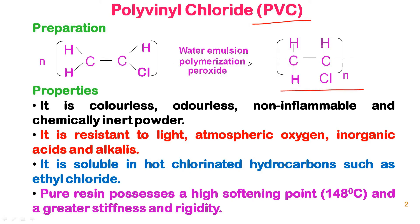Polyvinyl chloride, abbreviated as PVC, can be prepared by treating a water emulsion of vinyl chloride with a peroxide catalyst such as benzyl peroxide or hydrogen peroxide, to obtain vinyl chloride polymer. Its properties include being a colorless, odorless, non-inflammable, and chemically inert powder. It is also resistant to light.